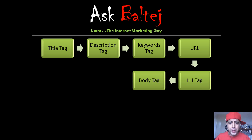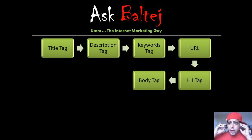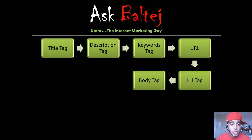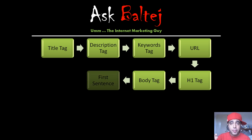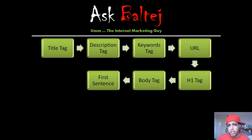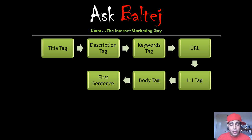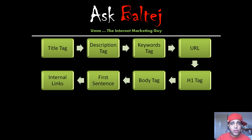Next, in your body tag — what this basically means is inside the content of your actual web copy. You obviously want to make sure that the phrase 'lawyer in Toronto,' if that's the phrase you want to go for, is inside your content. Just like human beings, Google reads from top to bottom, left to right. So if your keyword phrase is all the way at the bottom, that's telling search engines it's not that important. The closer you can get it to the top — ideally the first sentence or first paragraph — that is ideal. You should also scatter it throughout your content as well.